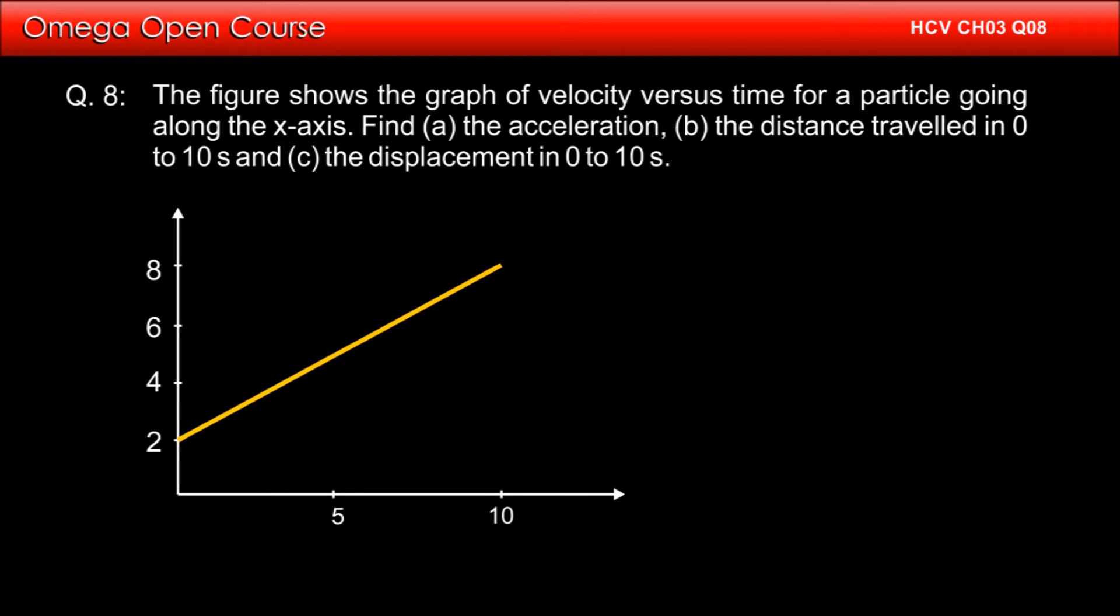The figure shows the graph of velocity versus time for a particle going along the x-axis. Find (a) the acceleration, (b) the distance travelled in 0 to 10 seconds, and (c) the displacement in 0 to 10 seconds.